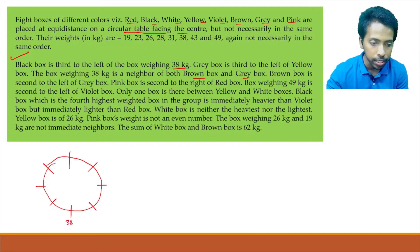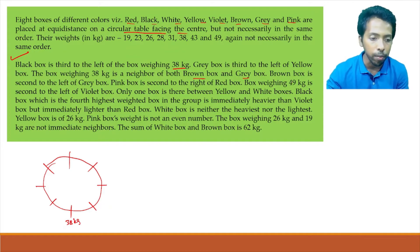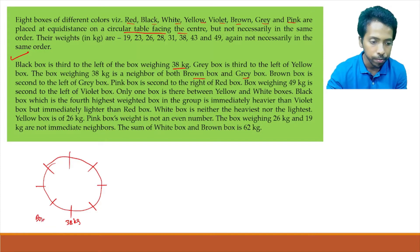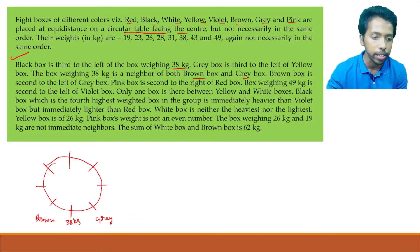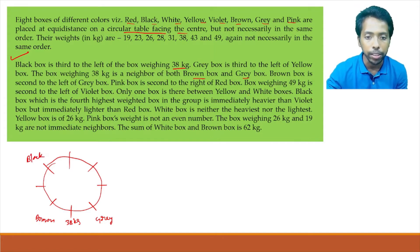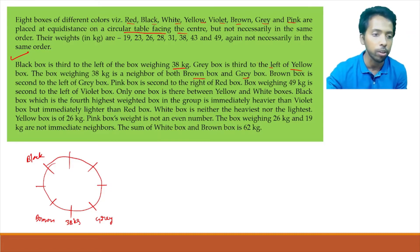Brown box is second to the left of gray box, and both are neighbors of the 38 kg box. So we can place brown and gray with 38 kg in between. All are facing towards the center, so brown comes here — second to left of gray box. Black box is third to the left of 38 kg, meaning two boxes are in between. Pink box is second to the right of red box. The box with 49 kg is second to the left of violet box.